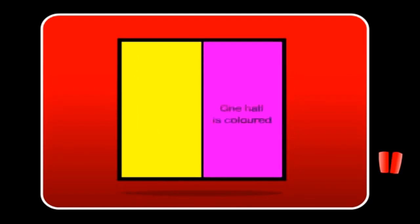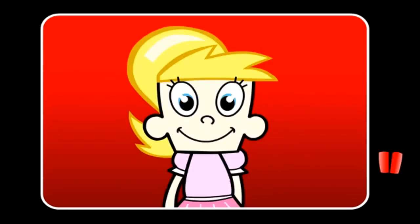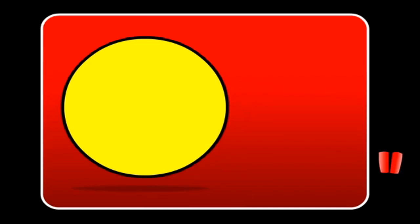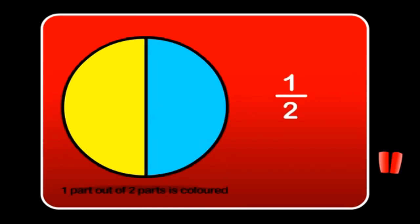We can cut shapes into halves too. Here is a square with a line down the center cutting it in half. If we color one side, we say that one half is colored. We can write one half using words like this — 'one half' — or using numbers like this: one half. This means that one part out of two parts is colored. Here is a circle where one half is colored — one part out of two parts is colored.